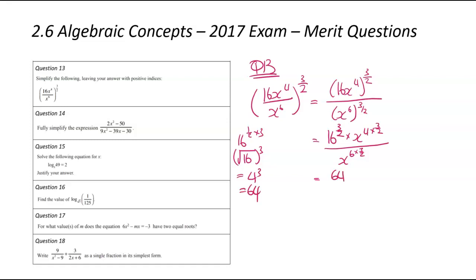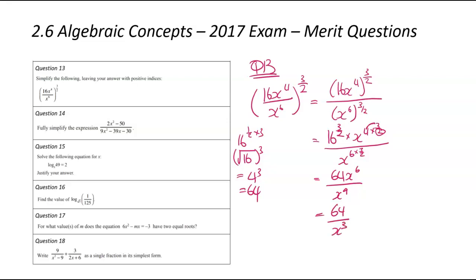So that's 64. Now dealing with x to the power of 4 times 3 over 2: 3 times 4 is 12, 12 divided by 2 is 6, so that's x to the power of 6. Similar thing for the bottom: 6 times 3 is 18, 18 divided by 2 is 9, giving x to the power of 9. We can then cancel out some of the x's — there'll be 3 left on the bottom. So that'll be 64 divided by x to the power of 3.